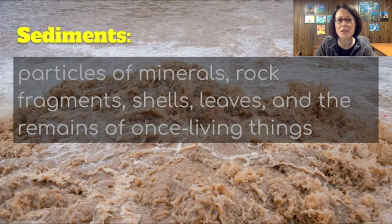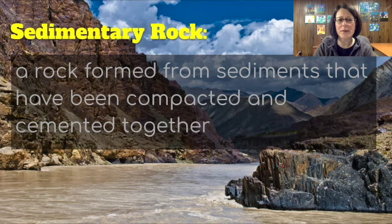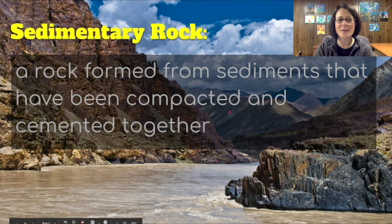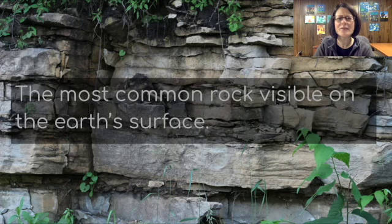In this picture, this river is carrying a lot of sediment — that's why it looks so muddy. And in this picture we have a river with a lot of sediment, but we also have some sedimentary rocks visible as well. This is the most common rock visible on the earth's surface.